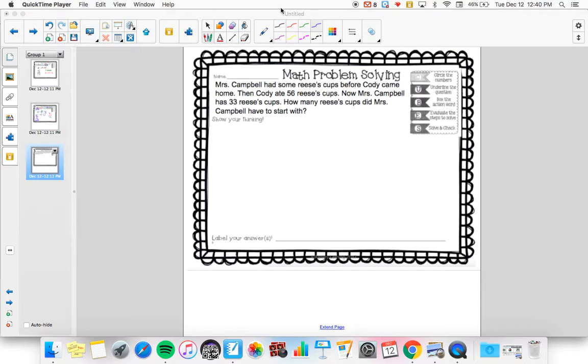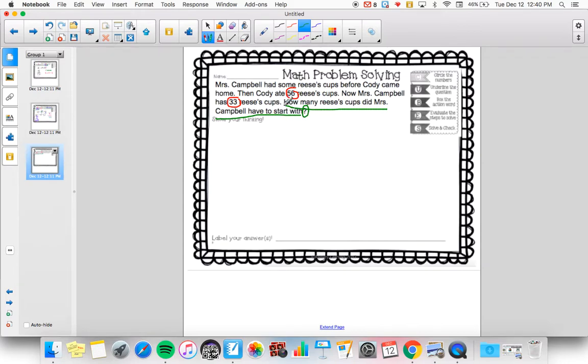So if I'm just going by starting with our cubes, I need to circle my numbers, which are 56 and 33. Then I know that I need to underline my questions, so I start at that question mark and work my way back to the start of the sentence, the capital letter. Now we have a couple of capital letters in here, so I make sure we go all the way to that period. How many Reese's Cups did Ms. Campbell have to start with?